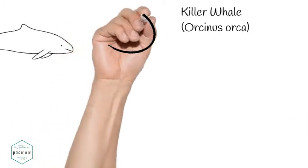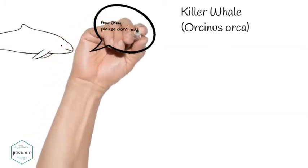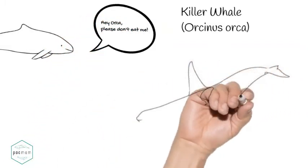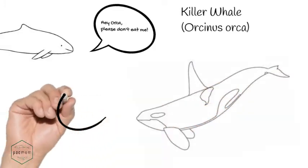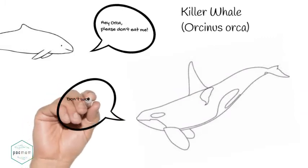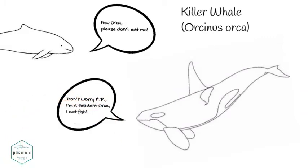The killer whale is a toothed whale and is actually the largest in the dolphin family, measuring up to 32 feet, weighing up to 11 tons, and living up to 90 years. We have three types of orca in the Salish Sea: the fish-eating residents, the marine mammal-eating transients or Bigg's, and the fish and shark-eating offshores. We know the least about this ecotype.